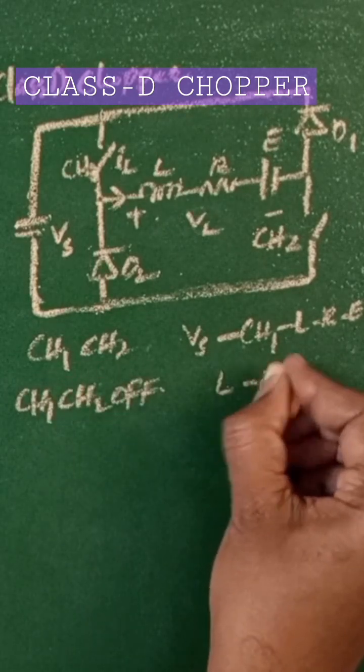D2 provide the path for the load current and VL will be reversed. When CH1 and CH2 are off, the current flows from L, R, E, D1, Vs, D2 to L. In both cases,